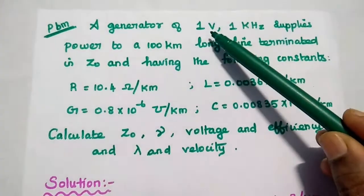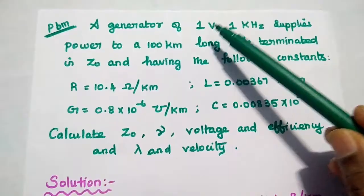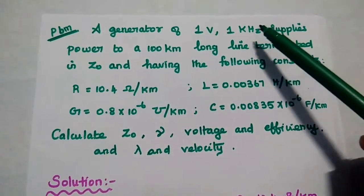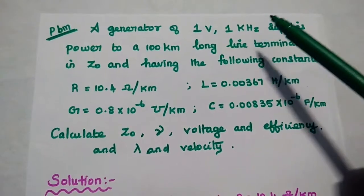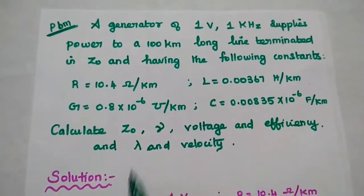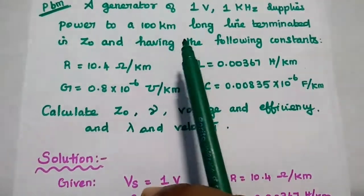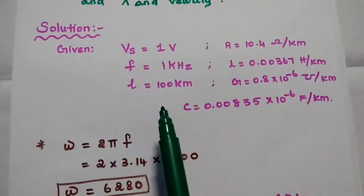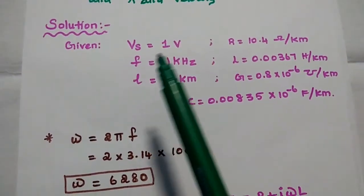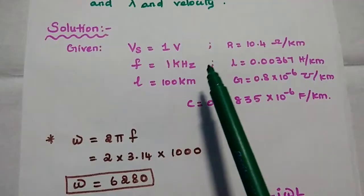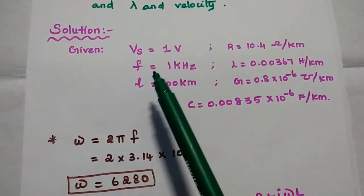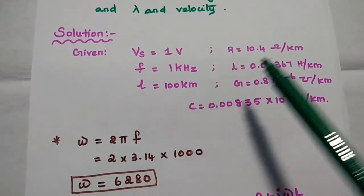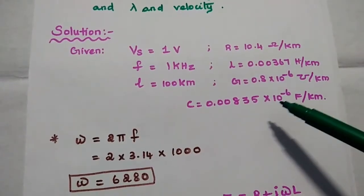In the solution part, we can first write the given data. The sending end voltage VS is equal to 1 volt, F is equal to 1 kilohertz, which means 1000 hertz, and the length of the line L is equal to 100 kilometers, along with the line parameter values.